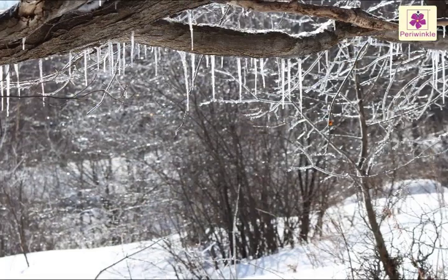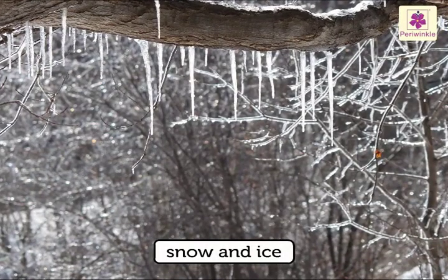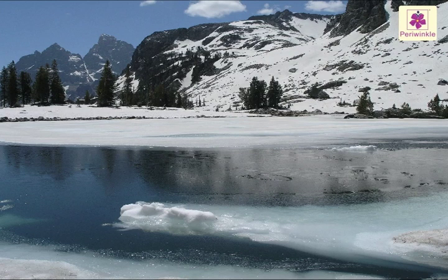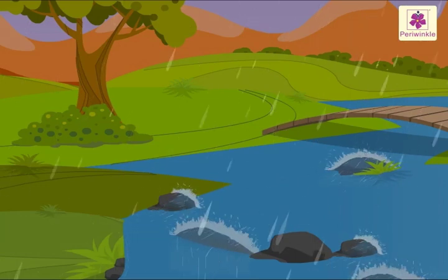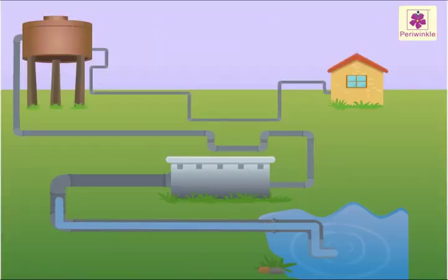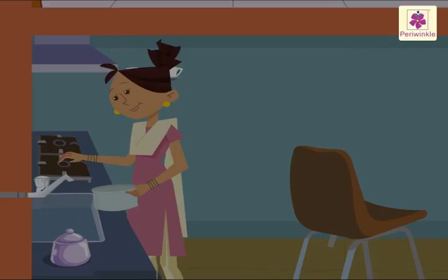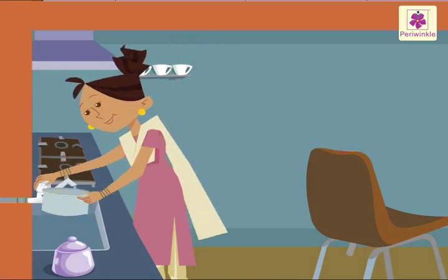Rain also turns into snow and ice. This melts and also forms rivers. Rainwater is pure. This water is brought by pipes to our houses. We open taps attached to these pipes and get water in our houses.